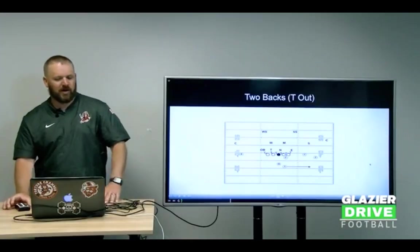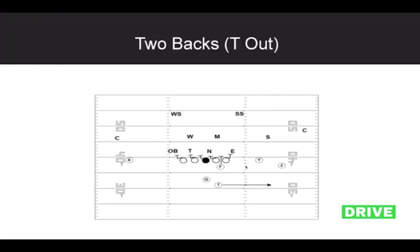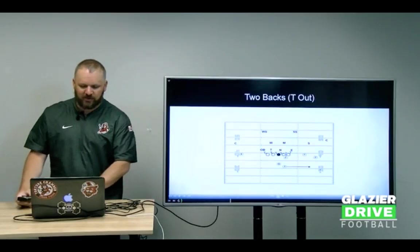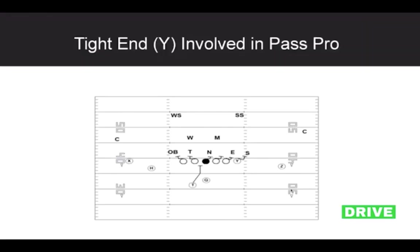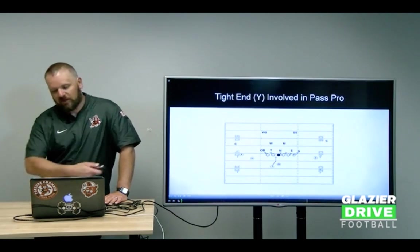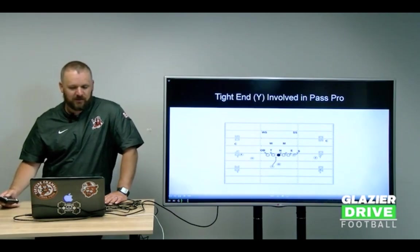We can also have two backs with the tight end out. The fullback has this gap — slide side, man side — and the back is responsible for the linebacker, with the back out in a route. We run some drive routes and things. It's really just one protection; we mix it up in how we present it. When we get our tight end involved in pass pro, we typically put the slide side to the tight end to make it easy for him — he's got his outside gap on the slide side. Nothing changes for the O-line; it's still the same pass protection.